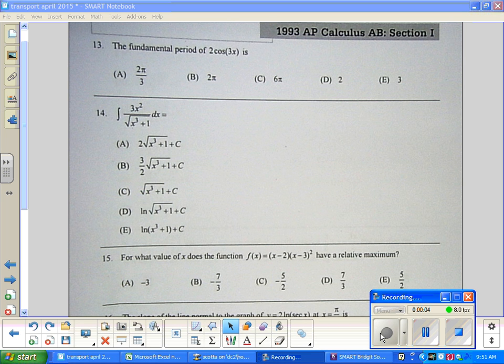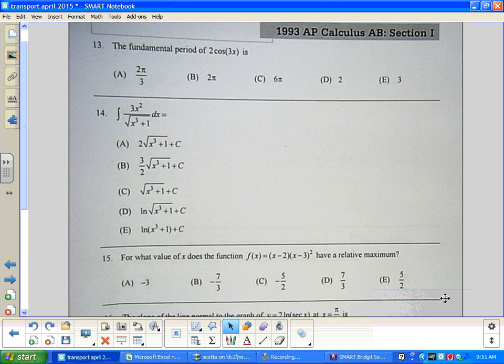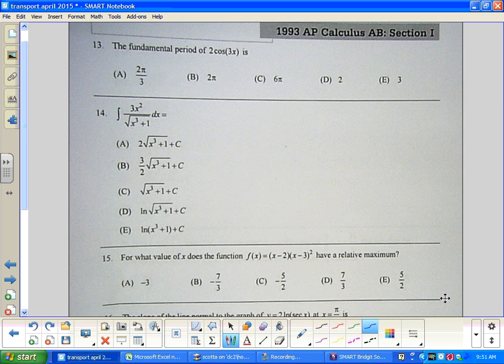1993 AP Calculus AB section 1, problems 13, 14, 15, 16, and 17. Again, you can see it then do it. I'm going to quickly go through this. Fundamental period of 2cos(3x) is - well first thing I think you better know, we should know our parent functions of cosine.